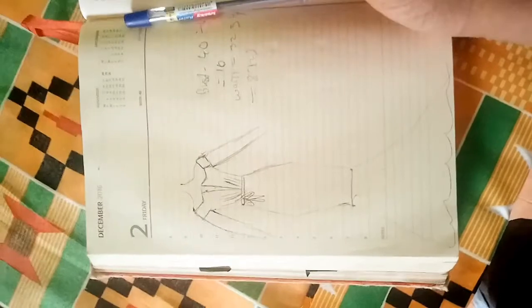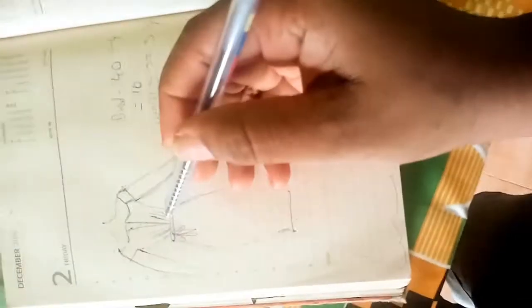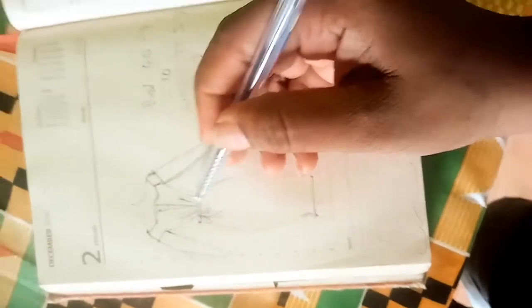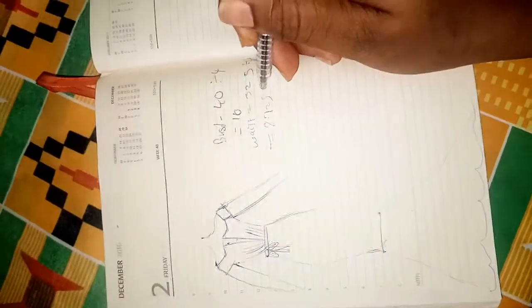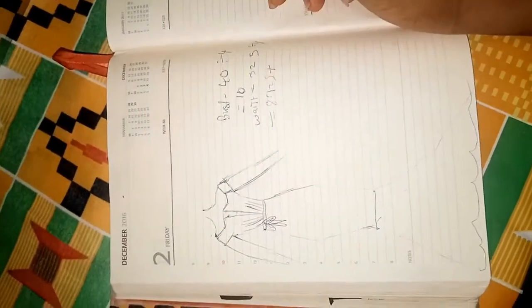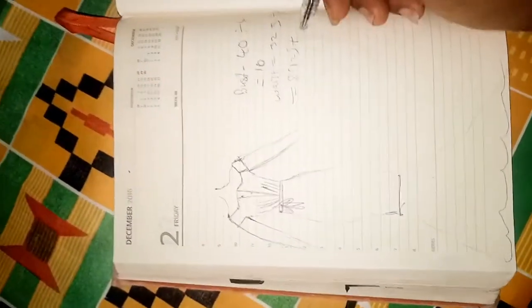Now to determine the waist, I need to determine how many inches I want for waist allowance. Personally, I don't want it to be too full, so I'm just going to be adding about four and a half inches.